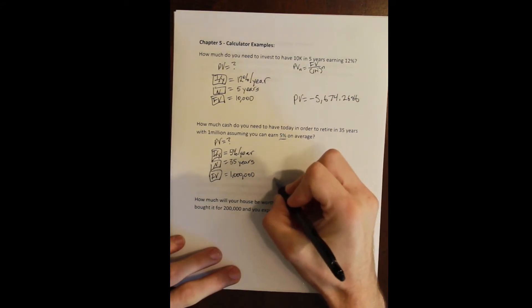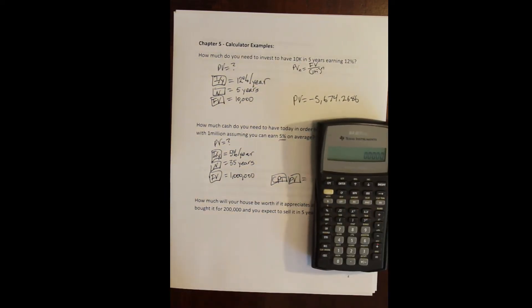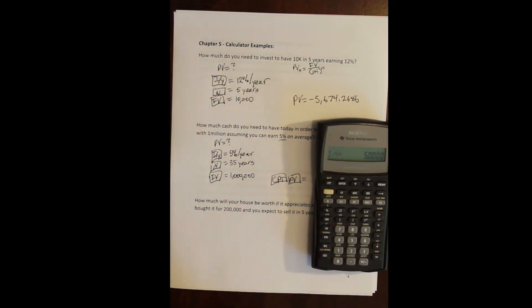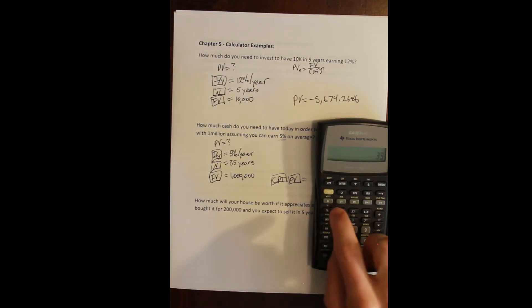Now we compute our present value. First thing we always do: second, future value to clear the time value of money function. Now we've got zeroed out buttons and we can start wherever we want. We'll start with the I/Y. Remember we're going to press the value first, then press the I/Y button to set our value. With I/Y, with the rate, we are always entering in the calculator or Excel as a whole number, so we are entering as a percentage instead of a decimal.